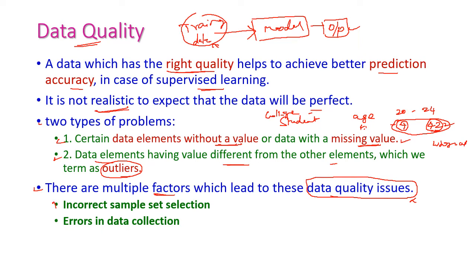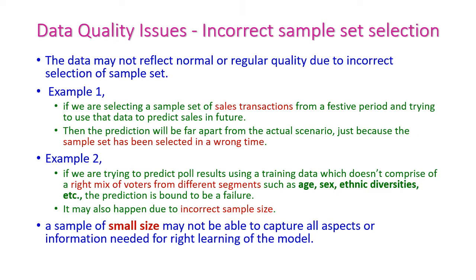There are multiple factors which lead to data quality issues. The first one is incorrect sample set selection — in the entire population, we need to select a sample for training our model, and this incorrect sample set selection will lead to issues in quality. The second one is errors in data collection, where while collecting the data, we may have made some mistakes.